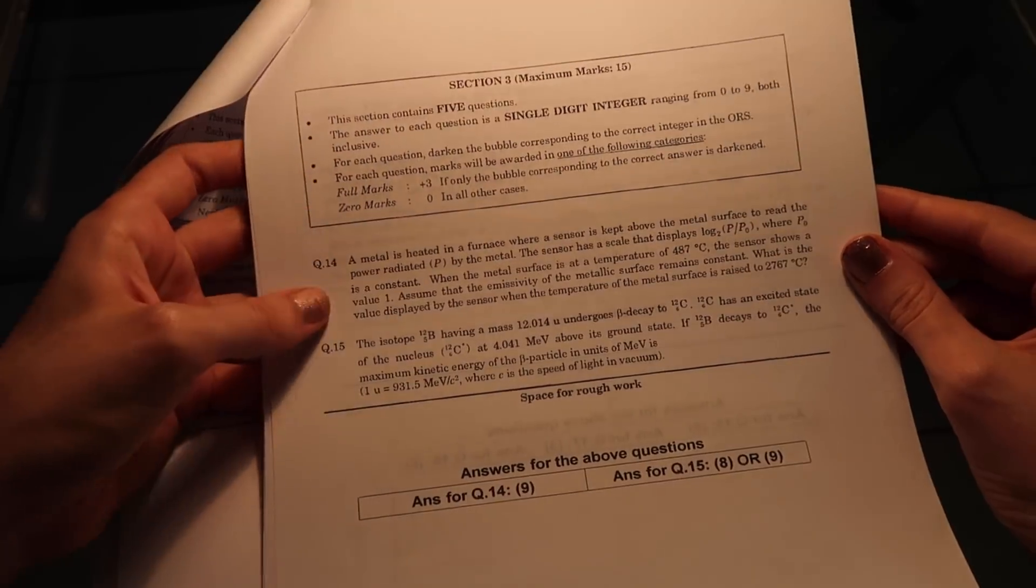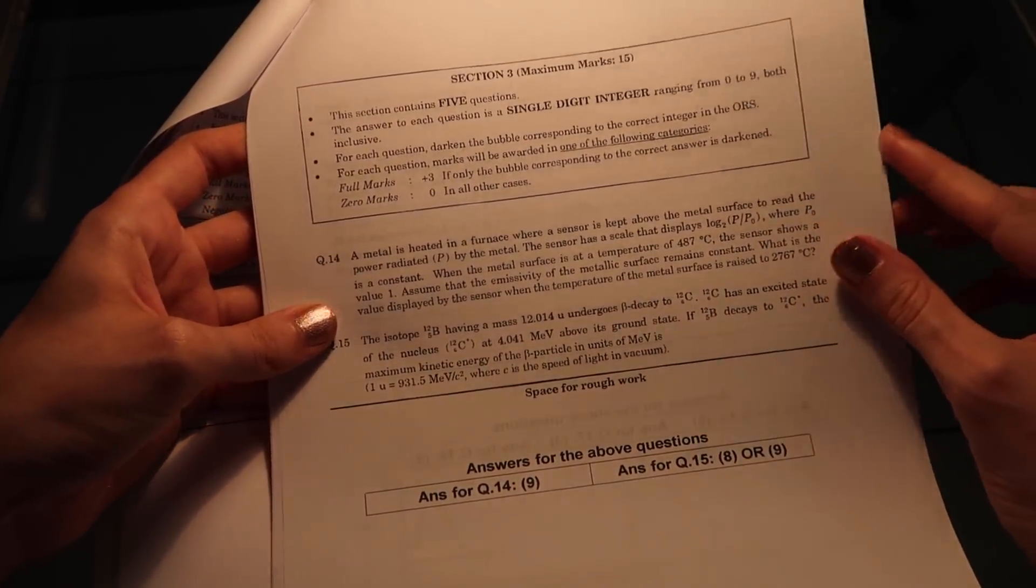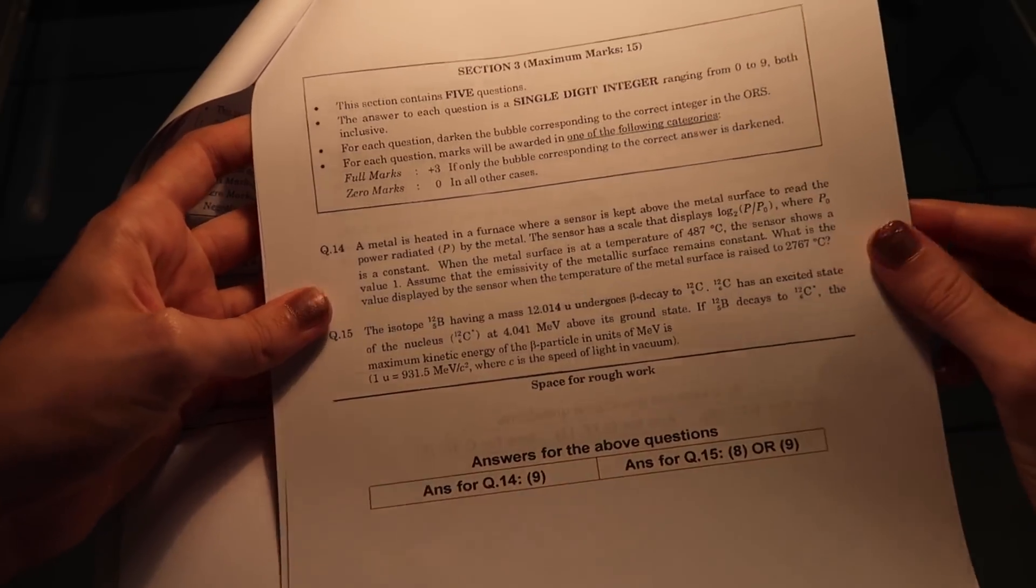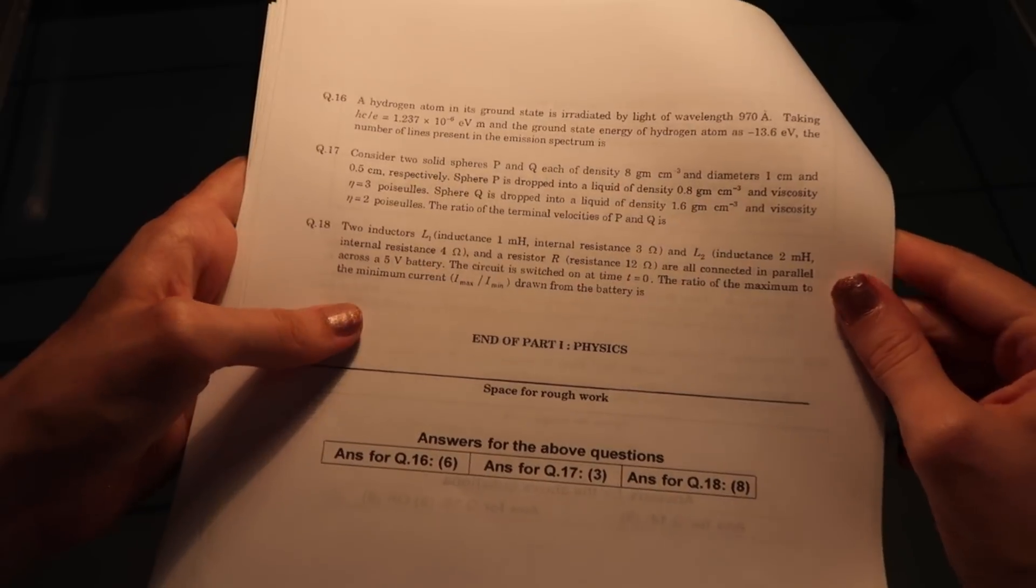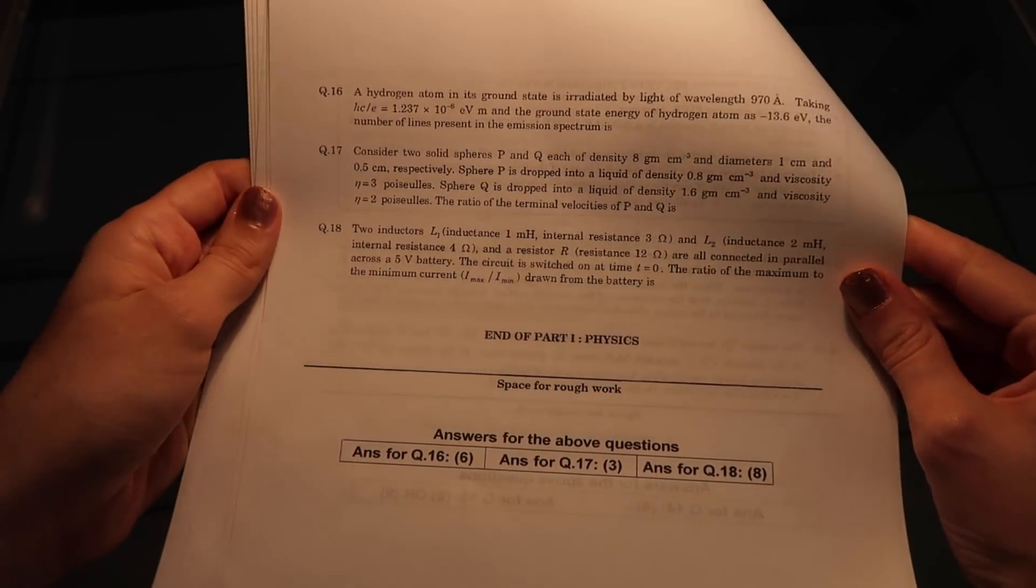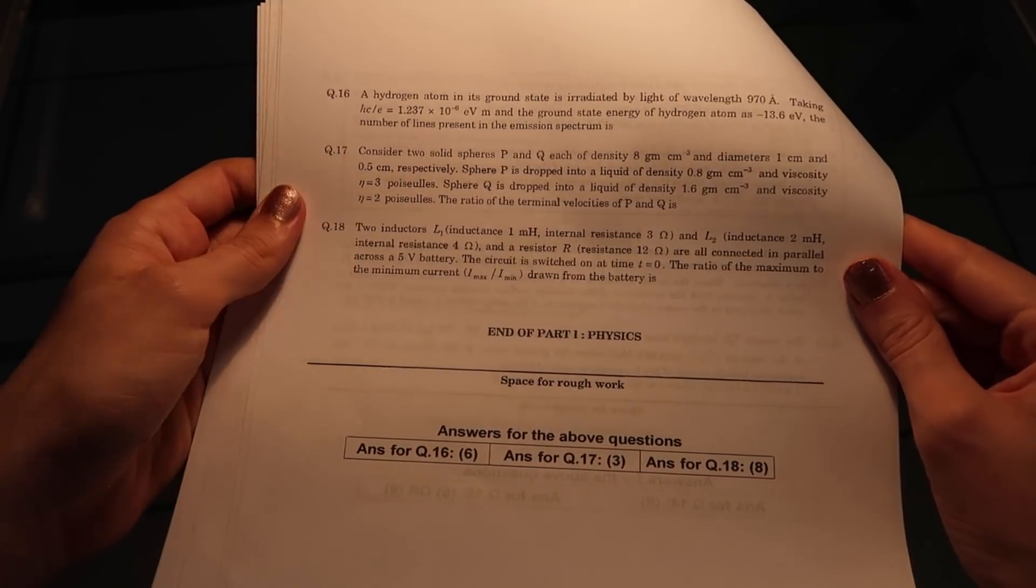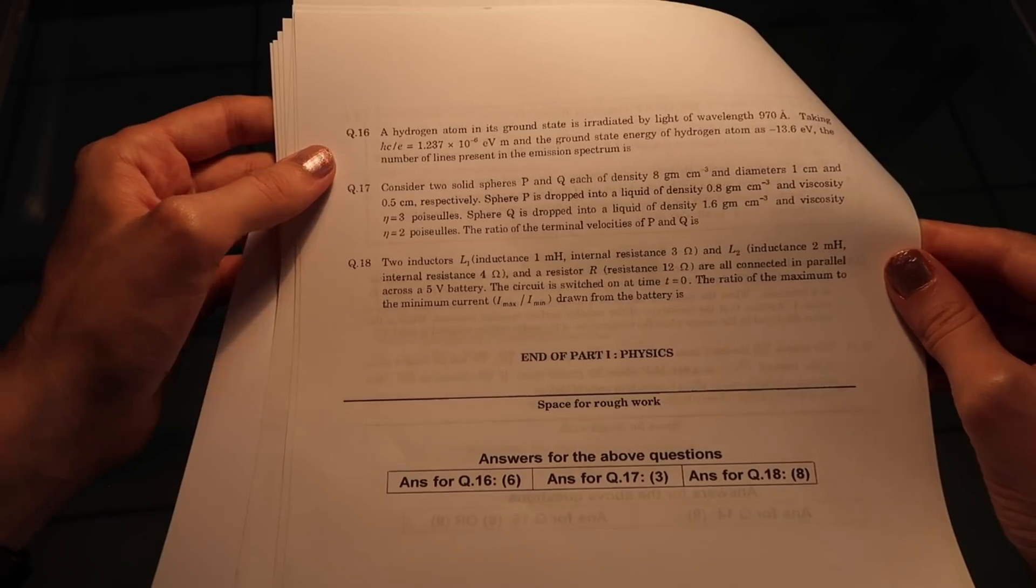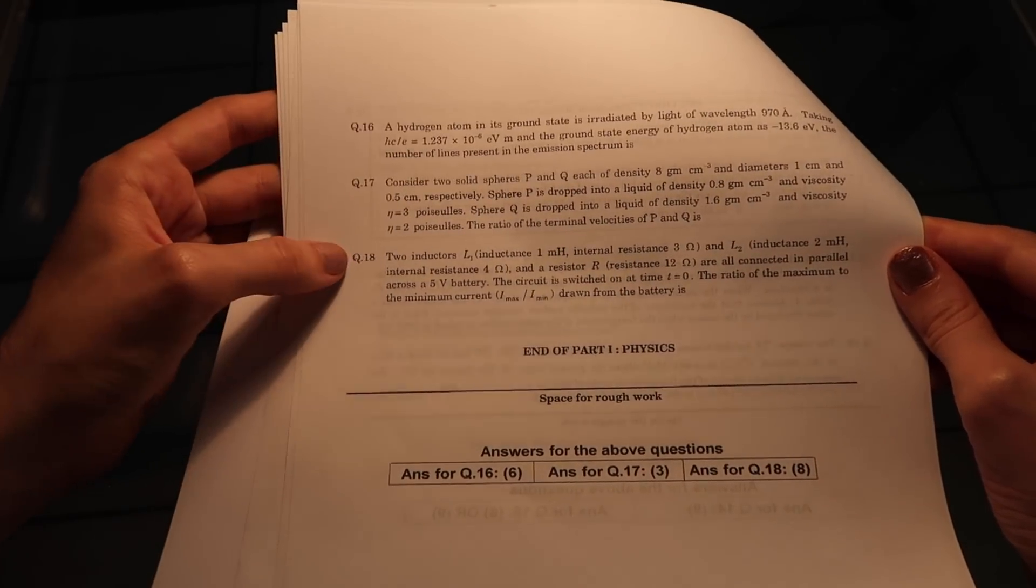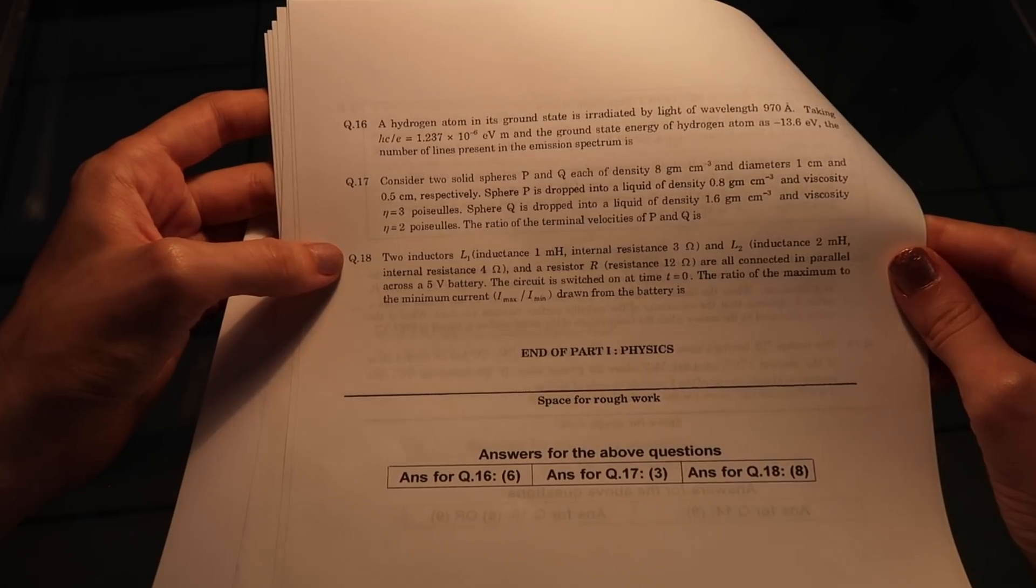Then we've got section three on the physics section and it changes a little bit here. Instead of being multiple choice, it looks like there's a single digit integer for each answer and some of these are a little bit more involved. I do sort of feel that by the end of this physics section we've covered material that yes, I definitely would have learnt at my first year university course.